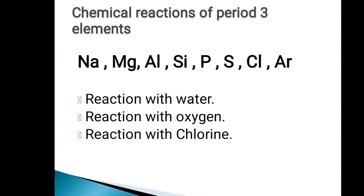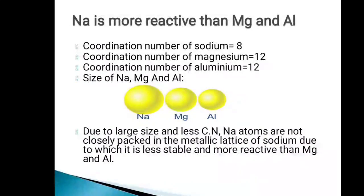As you all know, period three elements include sodium, magnesium, aluminum, silicon, phosphorus, sulfur, chlorine and argon. Before discussing the chemical reactions, first we will discuss the reactivity of sodium, magnesium and aluminum. Sodium is more reactive than magnesium and aluminum, showing comparatively more reactivity towards water, oxygen and chlorine.